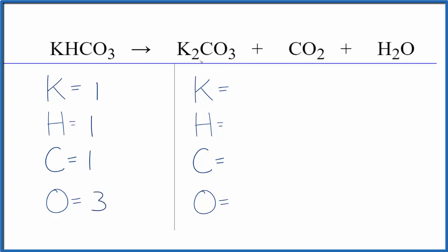In the products, we have two of these potassium atoms. Hydrogens, we have two. Carbons, we have one, plus, don't forget the one in carbon dioxide there, so we have two of those. And then oxygen, we have three, plus two, plus we have the one in water. So, we have a total of six.